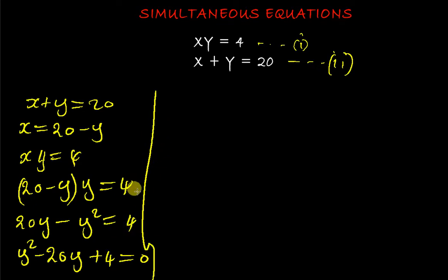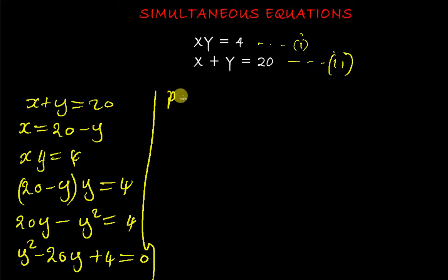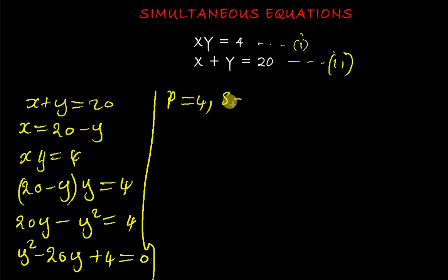To solve by factoring, we find two numbers that add to −20 and multiply to +4. The product comes from multiplying the coefficient of y² (which is 1) by the constant 4, giving a product of 4, and the sum is −20.